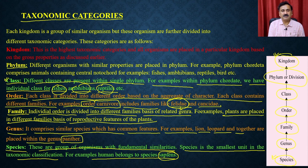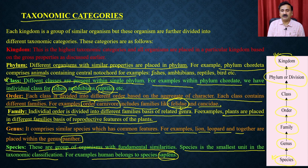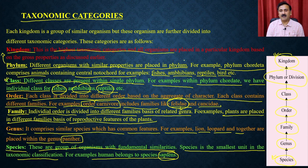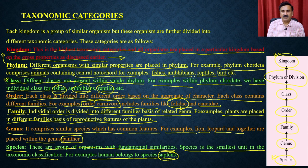Different organisms with similar properties are placed in a phylum. For example, phylum Chordata comprises animals containing a central notochord — such as fishes, amphibians, reptiles, birds, and humans. The kingdom is the highest taxonomic category, where all organisms are placed based on gross properties. For example, all fishes, amphibians, reptiles, and birds fall under the kingdom Animalia.